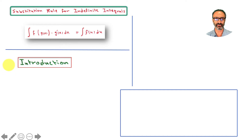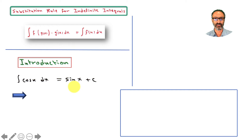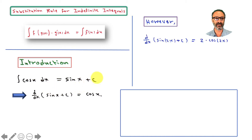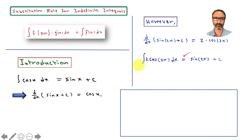Let me give you a quick introduction about why we need this rule. We know the integral of cosine is sine x plus C. Checking: the derivative of sine x plus a constant gives cosine. However, if you have sine 2x plus C, using the chain rule you get cosine 2x times 2 — you must also find the derivative of 2x. So the integral of cosine 2x with a factor of 2 takes you back to sine 2x plus C.